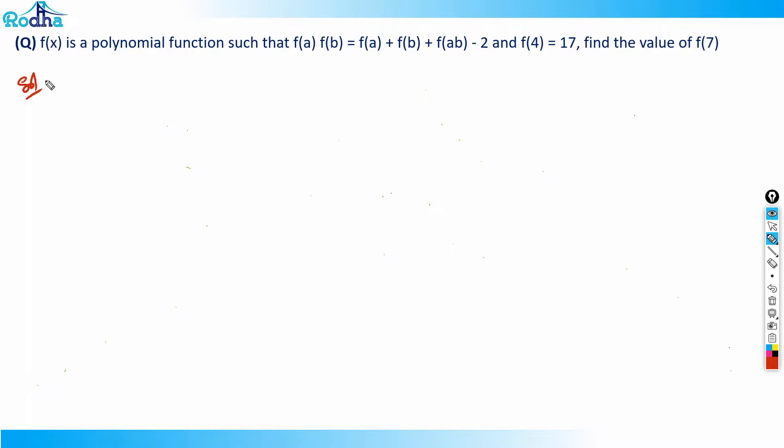Function questions are basically all about observing patterns. You need to put some values and observe what is happening. Now I need to utilize f(4) = 17 here. How will I get that?